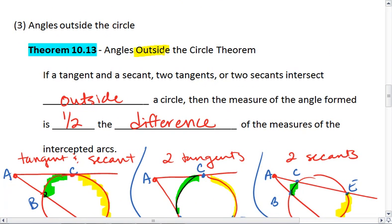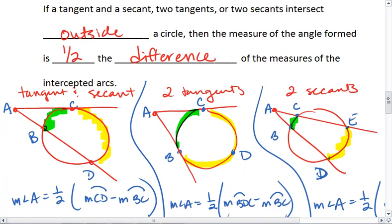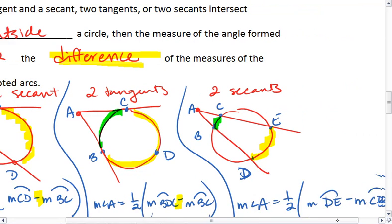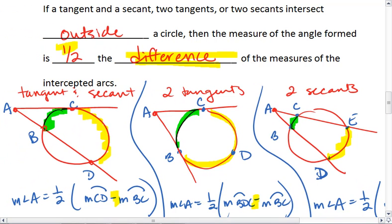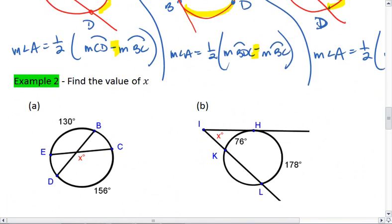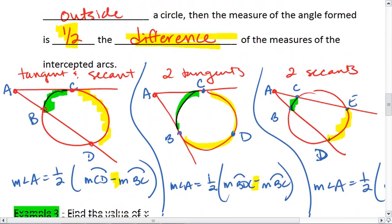If our angle is outside the circle, then what we do is we find a difference. We subtract our two intercepted arcs, and then we divide by half. So inside, add. Outside, subtract.